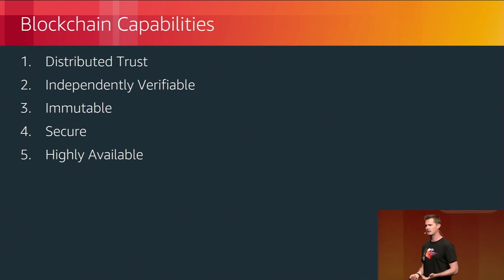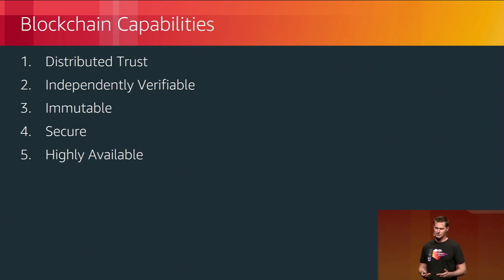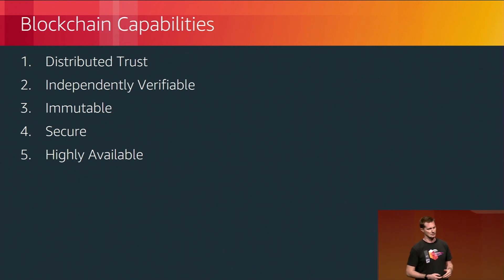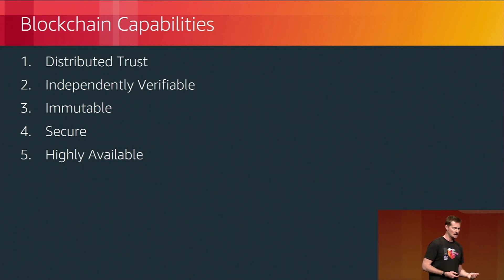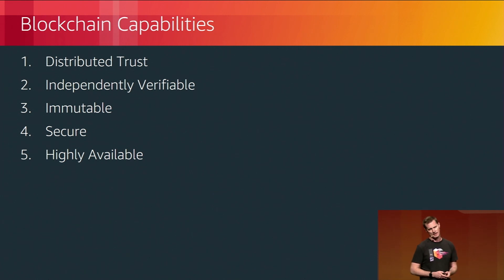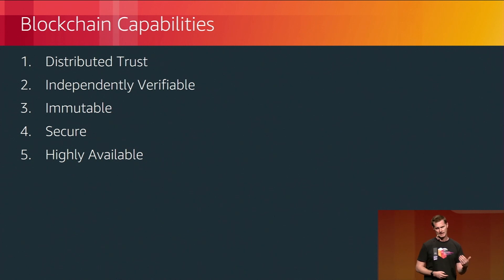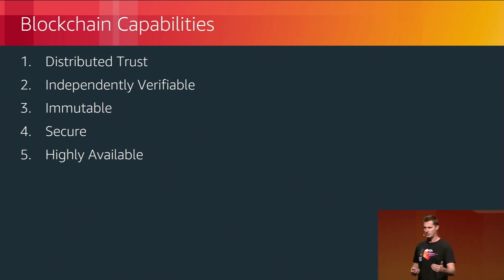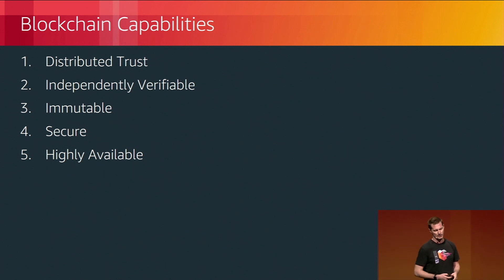Only the holder of that private key has the ability to view and sign those transactions, hence it's very important to keep those private keys secure. Finally, it's a highly available network — each of the nodes has a full copy of the code and all of the data within that network, so there's no single point of failure. You can take down all the nodes except for one and you've still got a running network.